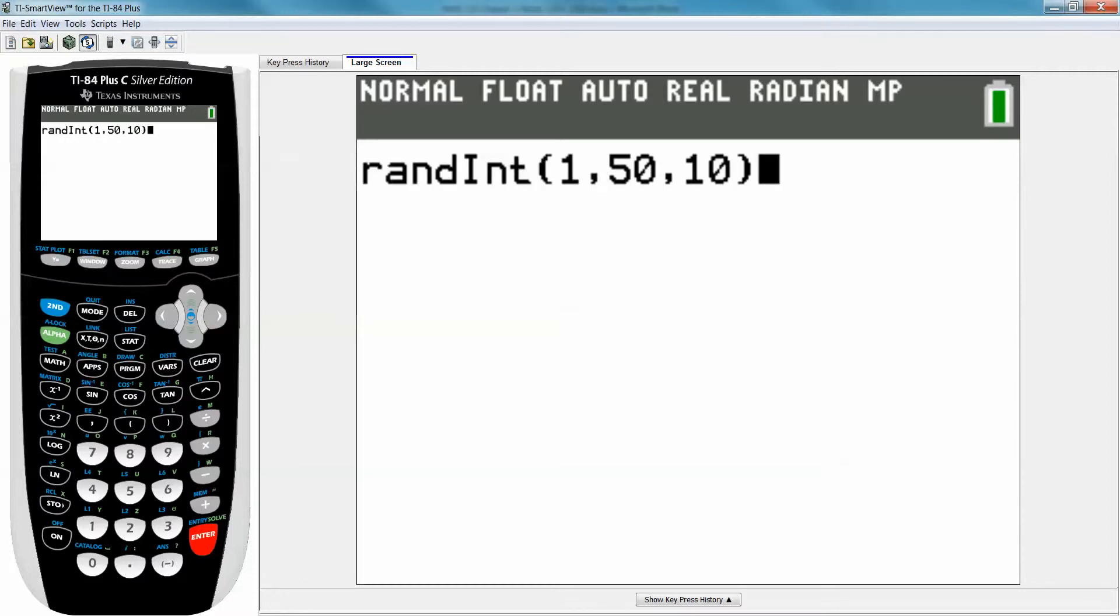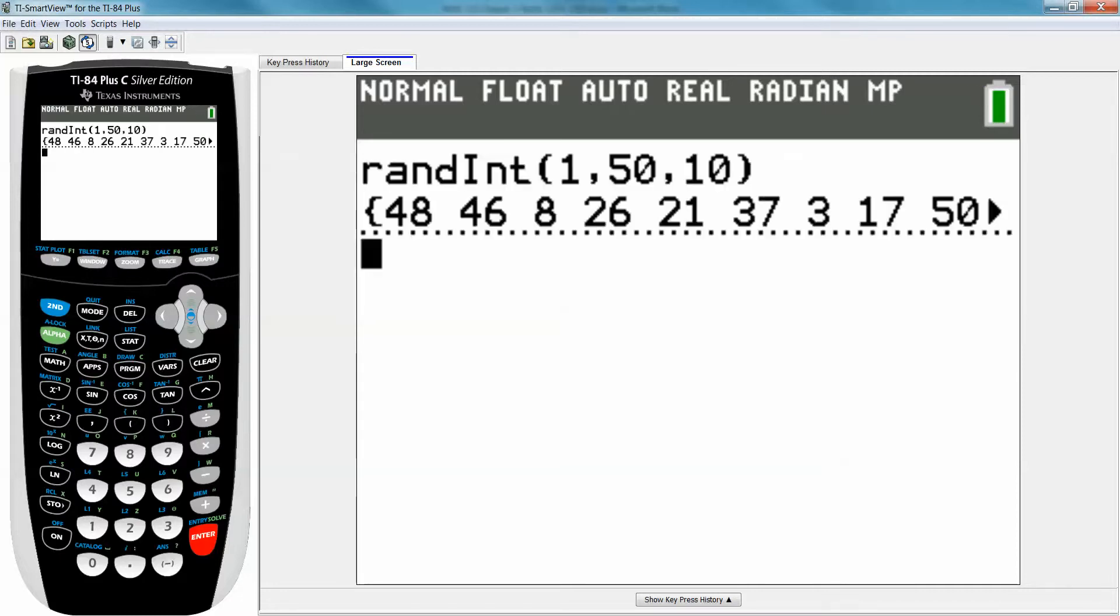And if you have an old calculator in the old operating system, this is what you have to type. So you choose the randint, and then you do 1 comma, the comma is above your 7. It's that button right there. Comma, 50, comma, 10. And close your parentheses, and press enter. The new operating system takes you through that menu first. So you can see I have 10 numbers here. Wonderful. And it looks to me like I was lucky, and none of them repeated.